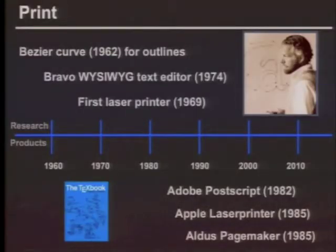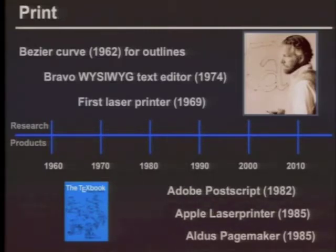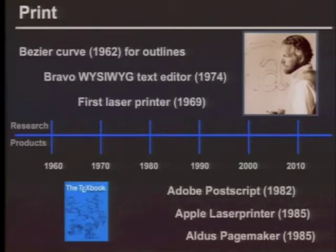I put together four timelines of each of those transformations. These are not meant to be historically precise, but include key events at both the research level and the commercialization level. The first one that really hit was print. I graduated in 1986, and when I left school I could print my dissertation on a laser printer. The printing technology we take for granted started with some fundamental research — John Warnock at Adobe came up with the fairly simple idea of taking the Bézier curve from the CAD/CAM industry, designed to model automobiles, and using it to model fonts.